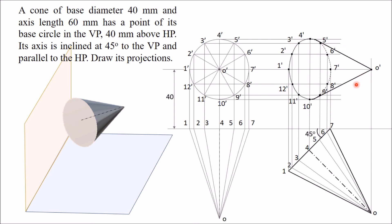In this way the front view and top view of the cone are completed. You can also draw the axis of the cone in the front view. Point 7 is on the VP, which is why it falls on the XY line. The axis is inclined at 45 degrees to the VP and parallel to the HP. Thank you.